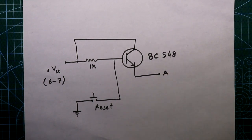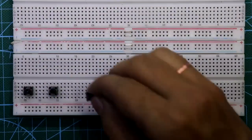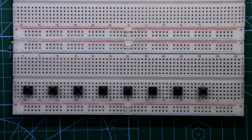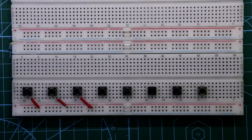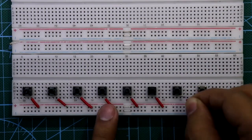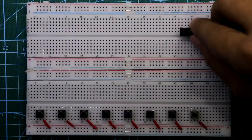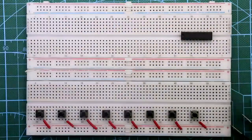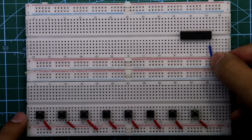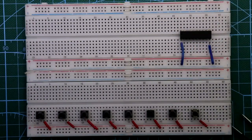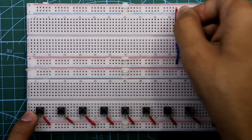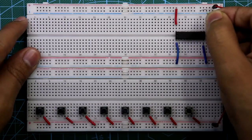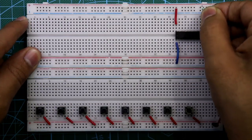Now let's see the breadboard connections. Put 8 switches — one pin of each switch is connected to point A. I will take the positive rail as point A. Now put the IC 74373. Pin number 10 is connected to ground, and also pin number 1. Connect both the positive rails. Pin number 20 is connected to point A, and a 10 kilo ohm resistor is connected between pin number 11 and the point A rail.